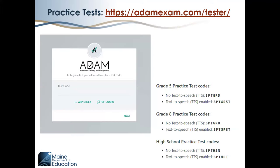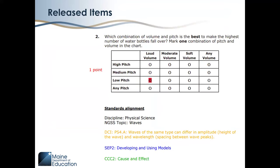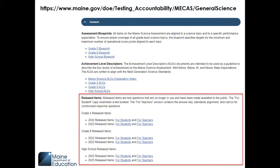Proctors can help prepare students for navigating the assessment platform by having students answer questions in the practice tests. Students can access the practice tests at adamexam.com by typing in the practice test code. Released items are different from practice tests because released items are questions that were previously included in the Maine Science Assessment. The teacher version of the released items includes the question, correct answer, and Next Generation Science Standard alignments. For released items from the Maine Science Assessment, please see the PDF documents on the Maine DOE's Maine Science Assessment webpage.